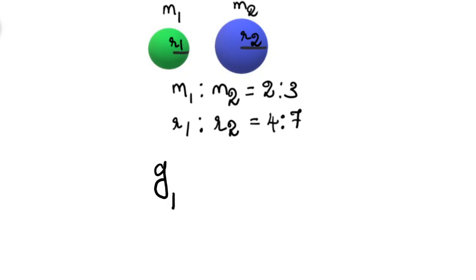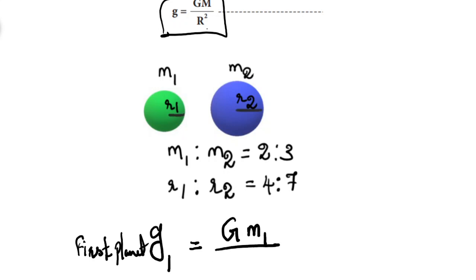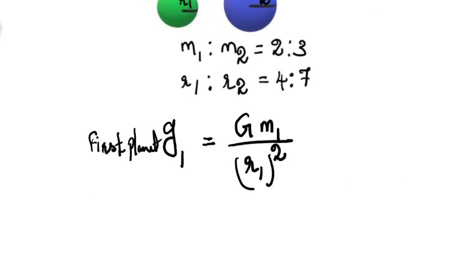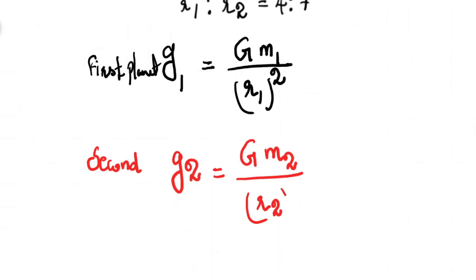Acceleration due to gravity for the first planet is G1. The general formula is g equal to G into M by R square. So G1 equals G into M1 divided by R1 square. Similarly, G2 equals G into M2 divided by R2 square.